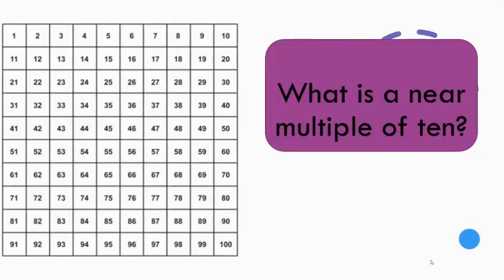Now this brings us to the next question: what is a near multiple of 10? A near multiple of 10 is a number which is very close to a multiple of 10. Usually they end in a 9 or a 1. For example, 9, 19, 29, 39, 49, 59, 69, 79, 89, and 99. So take a close look at them.